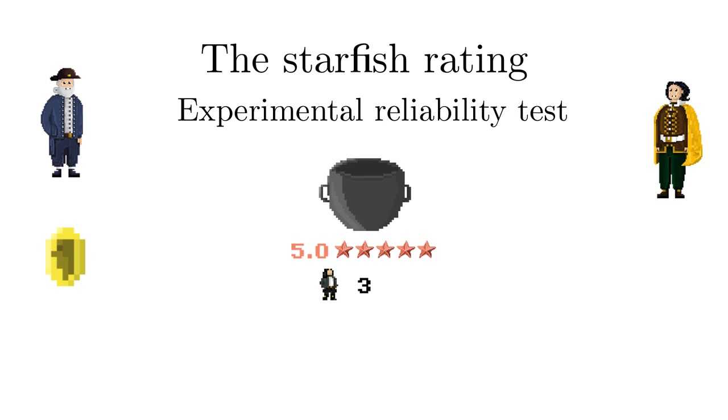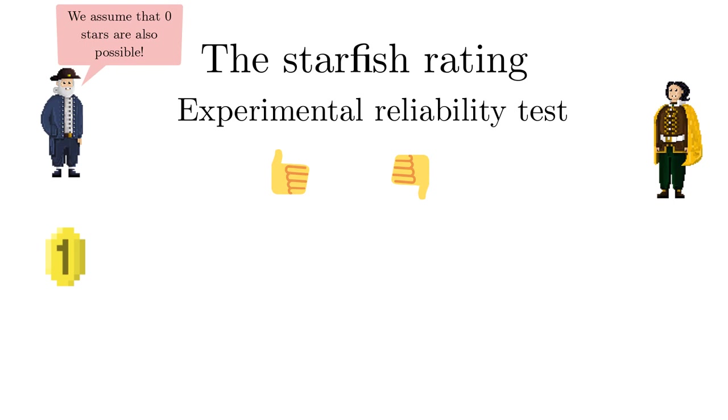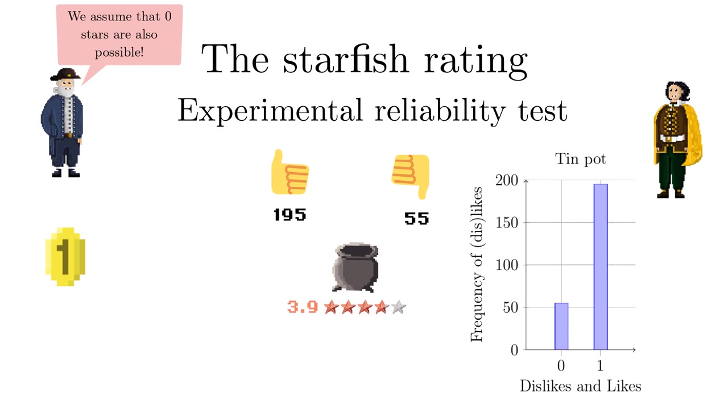So to describe the tin pot rating of 3.9 out of 5 starfish with 250 votes with binary votes, we have 195 likes and 55 dislikes. Let's assume Laplace has no preference, so his prior prejudice is 50% like and 50% dislike. Adding his own rating as one proportional vote leads to 195.5 likes and 55.5 dislikes and a new rating of 3.89 starfish. So a very modest reduction.